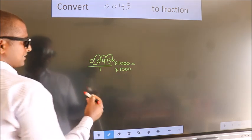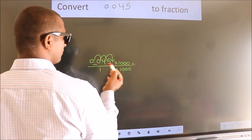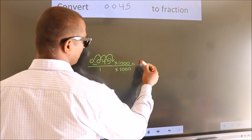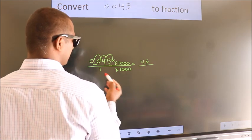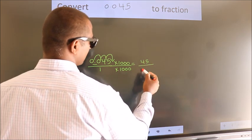Next, 0.045 into 1000, we get 45. In the denominator, 1 into 1000, 1000.